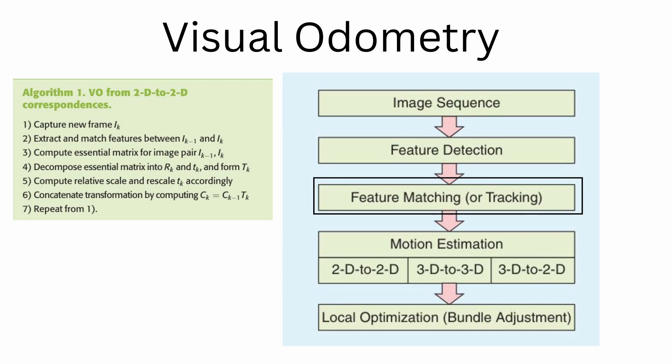There's a difference between feature matching and feature tracking. As I said, feature matching detects features independently in all images and matches them based on some similarity metrics like descriptors. Feature tracking finds features in one image and tracks them in the next image using a local search technique like correlation. The next step is motion estimation. For the two sets of matched or tracked features, let's say they are f_{k-1} and f_k. So these are the corresponding features from the two images.